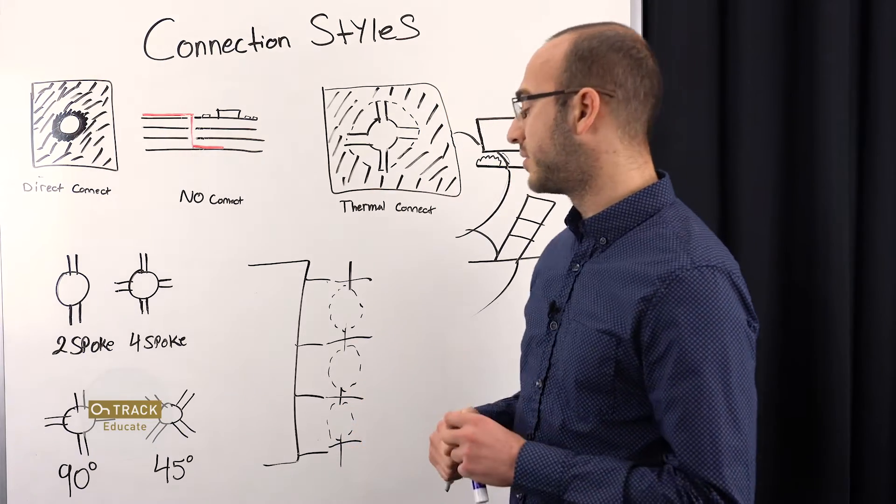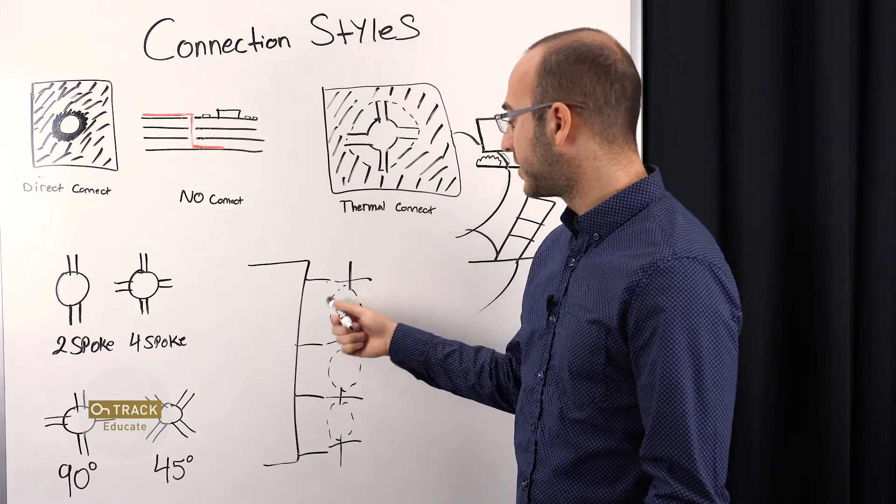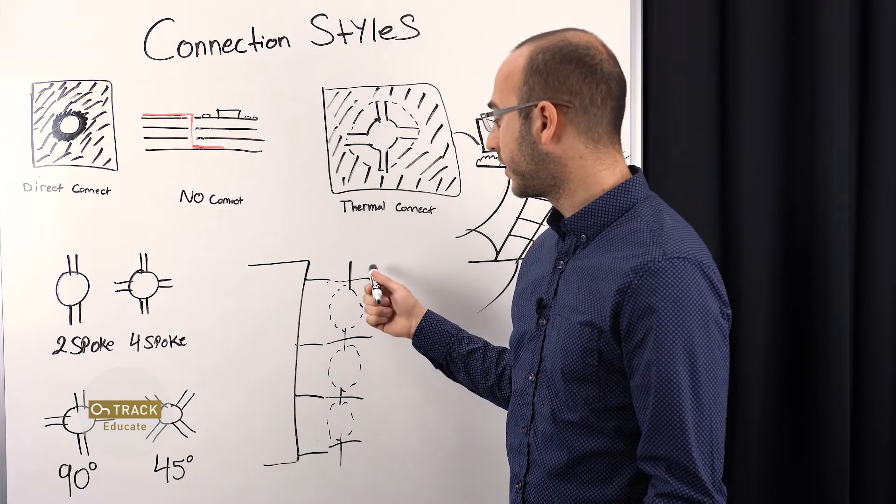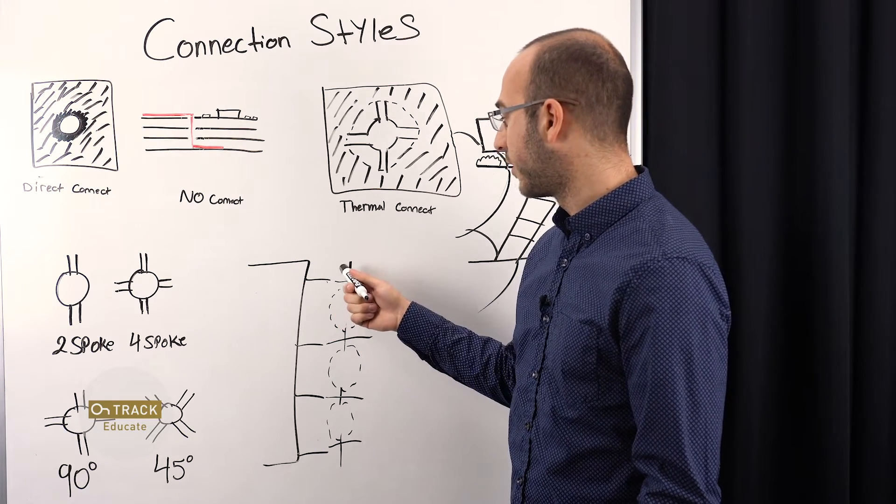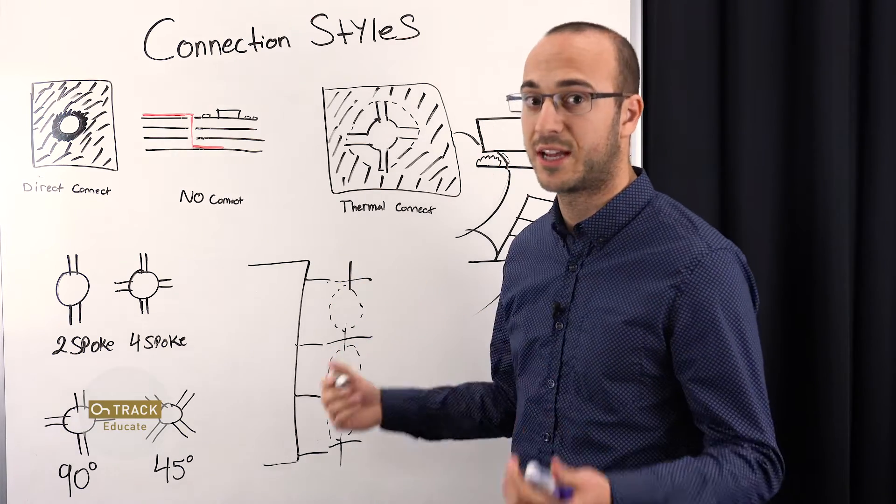And this is what we call a starved thermal. And now we're kind of where we were before. We're missing a spoke. Therefore, more current is being pushed through the remaining spokes, and it could create a fuse situation where these will burn up and you'll lose a connection.